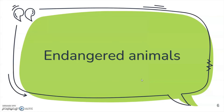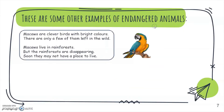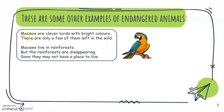Next, some other examples of endangered animals. The macaw bird — macaws are clever birds with bright colors. There are only a few of them left in the wild. Macaws live in rainforests, but the rainforests are disappearing, so they may not have a place to live soon.